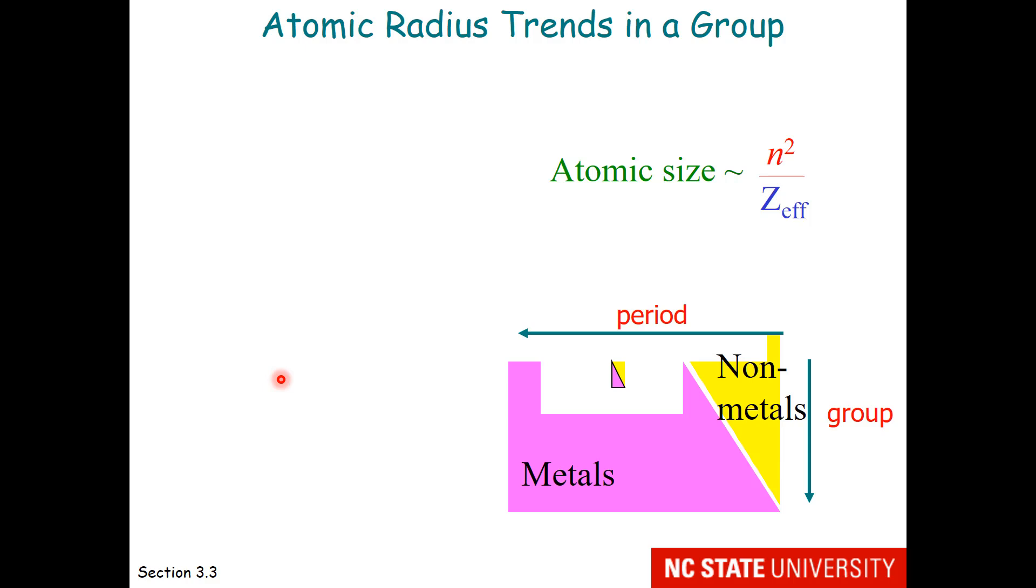What about if we go down a group? In that scenario, both n-squared and z-effective are changing. So let's start with hydrogen. That would be 1-squared over 1. The next one would be lithium. 2-squared over 1.3. So lithium is larger than hydrogen. And sodium is larger than lithium.